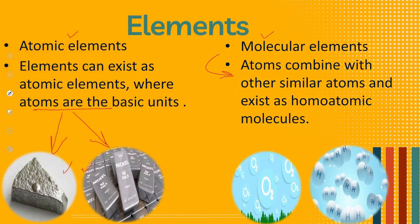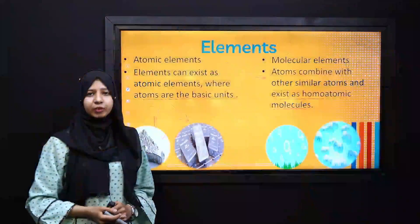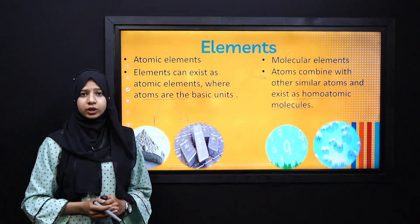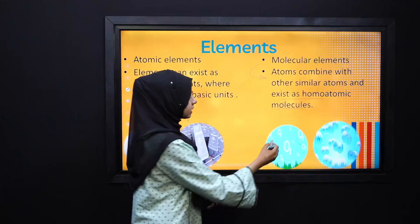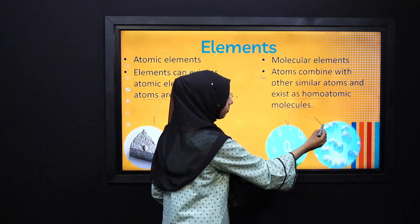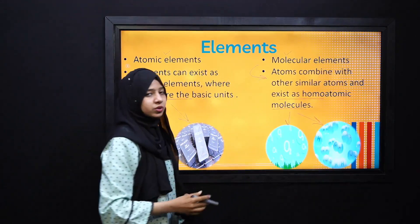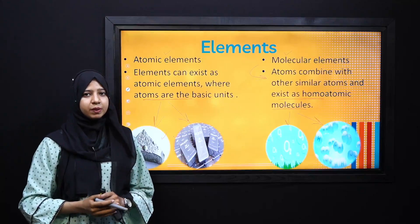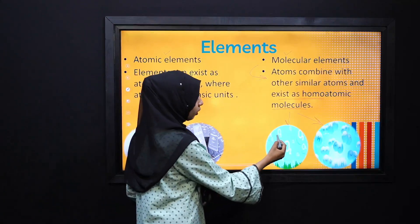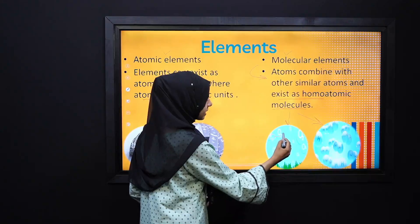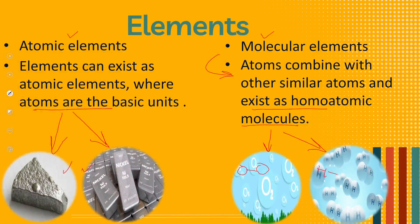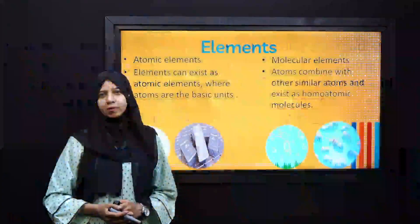In the case of molecular elements, the basic units are homo-atomic molecules, because these atoms are combined with other atoms of the same type. For example, oxygen and hydrogen gas. Oxygen is found bonded with other oxygen atoms, while hydrogen is found bonded with other hydrogen atoms. These are called molecular elements.